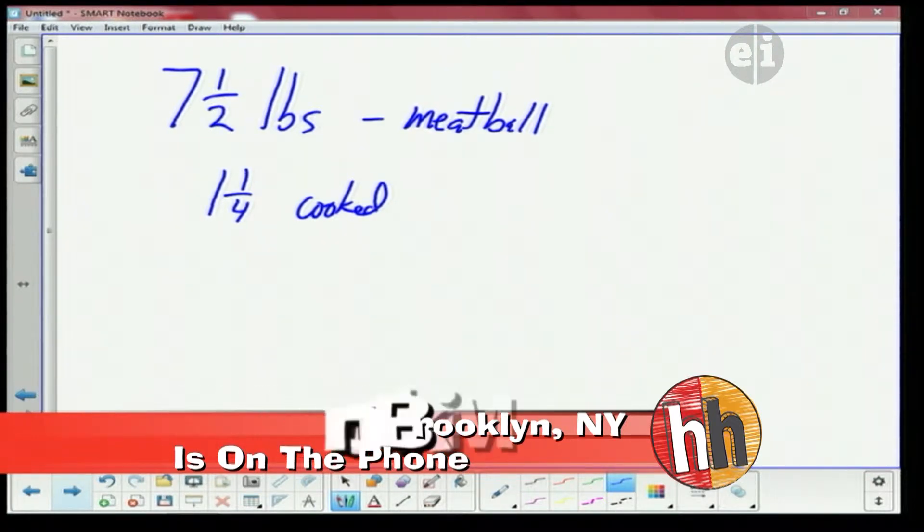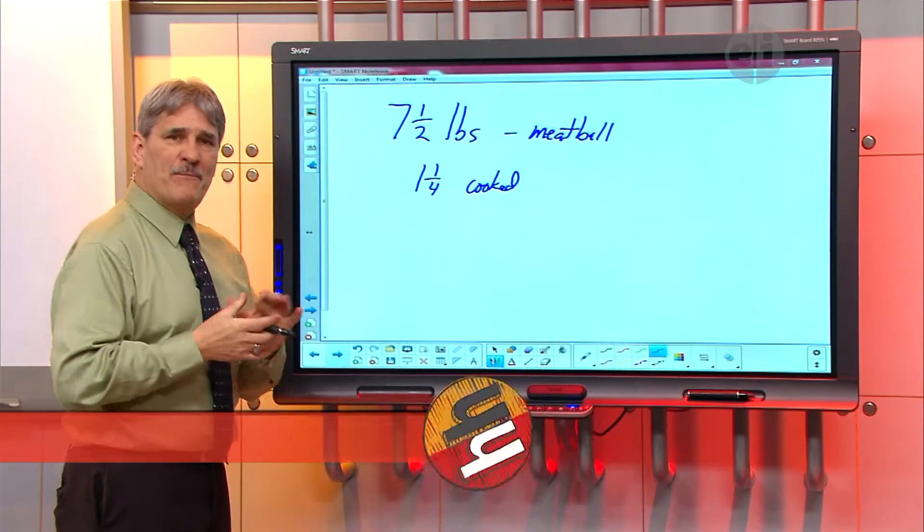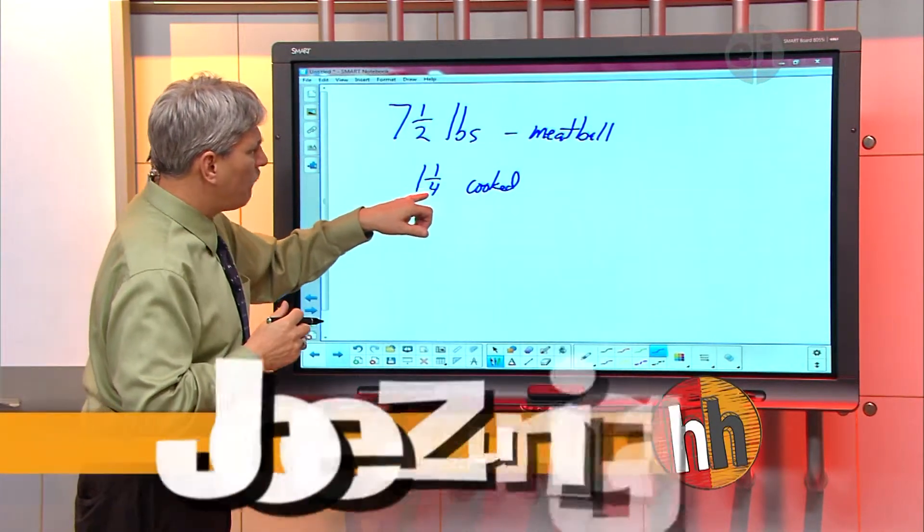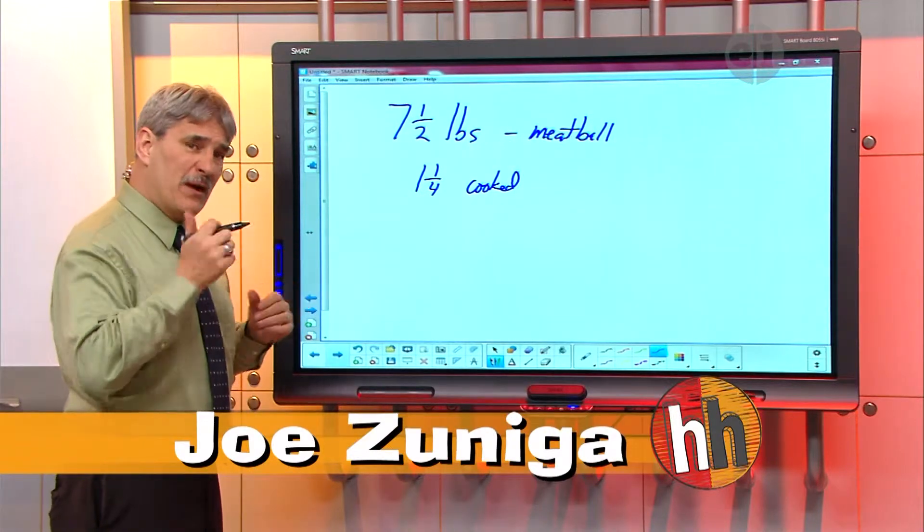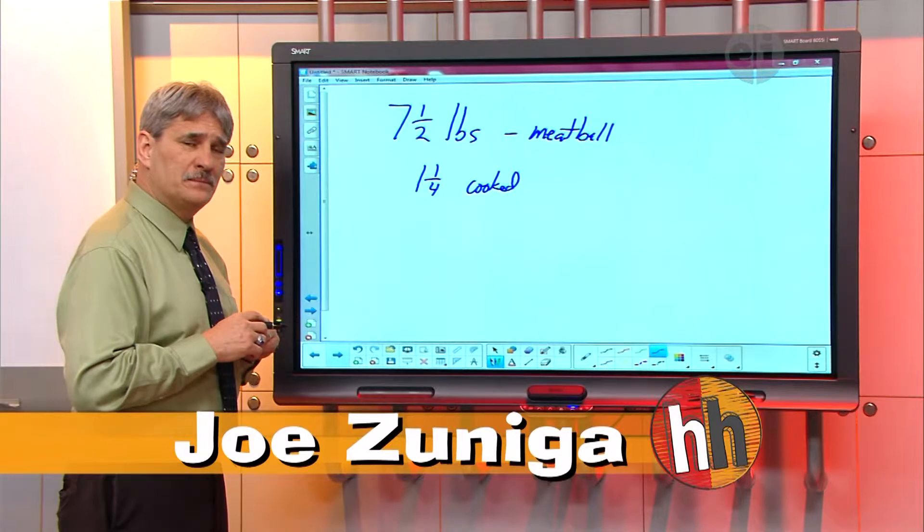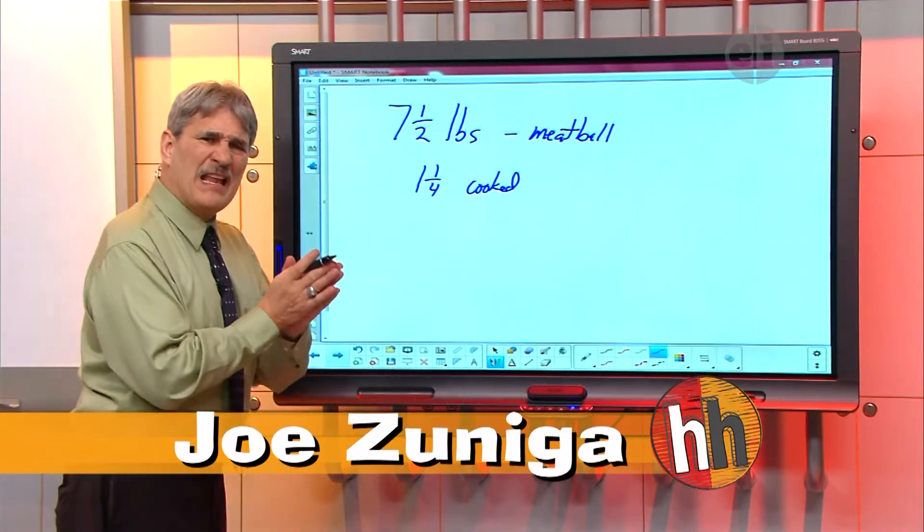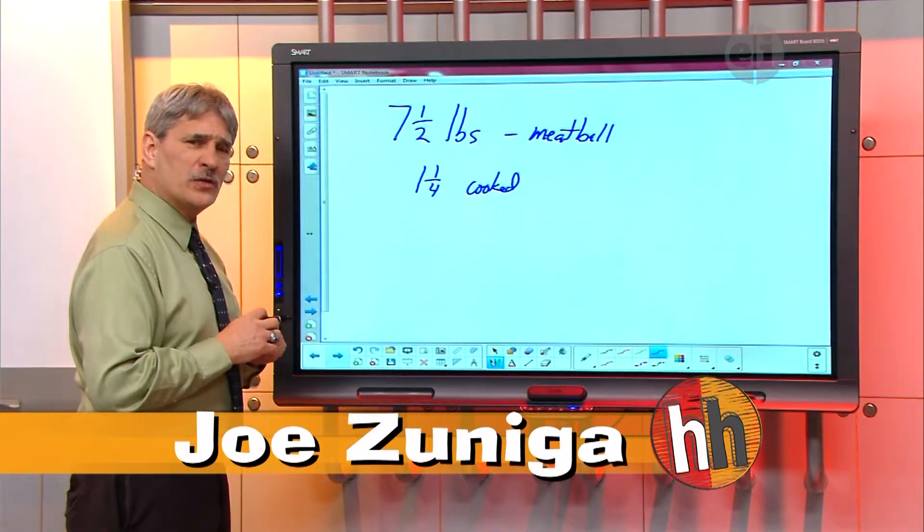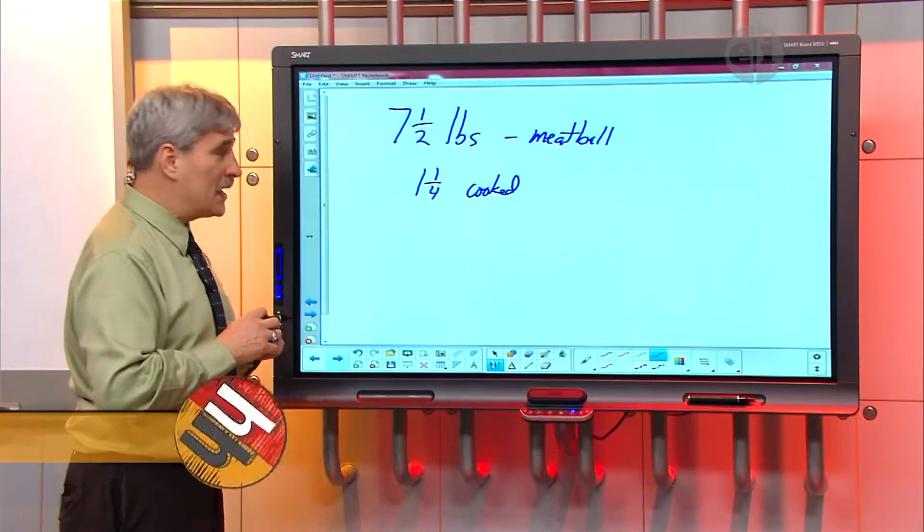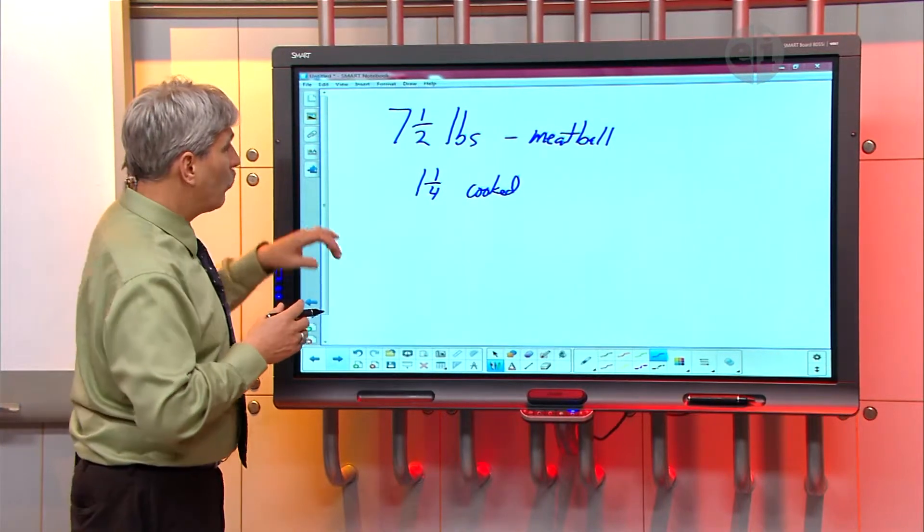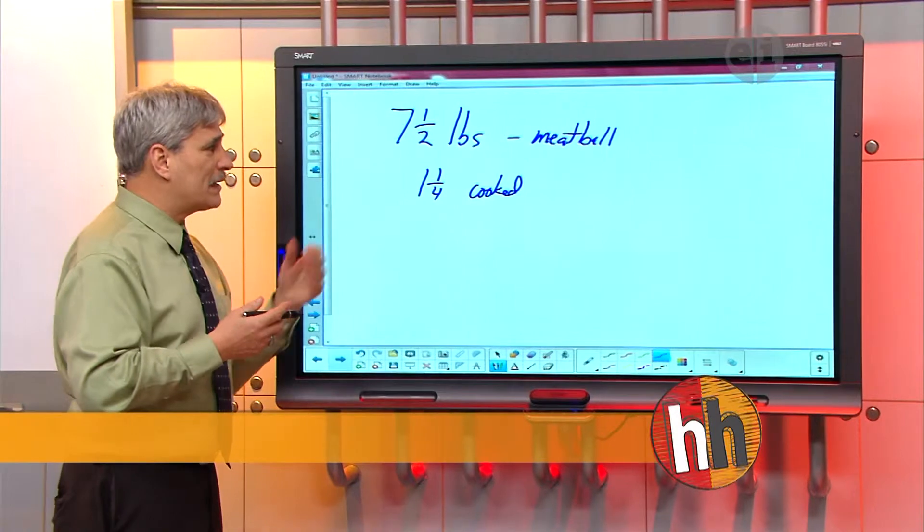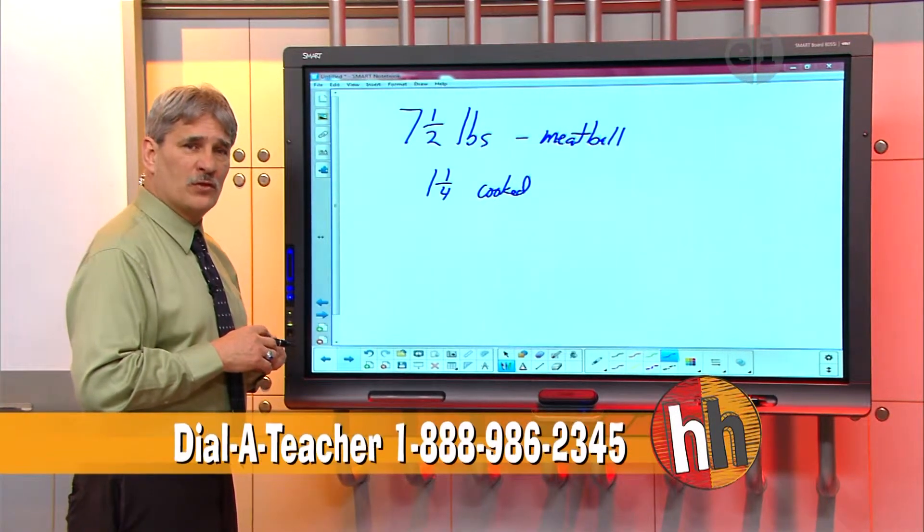Okay, so let's look at what we got here. We're starting out with seven and a half pounds of meatballs, right? And he cooks one and a fourth pounds. Whatever's left - that's the key word - gets frozen, right? Yes. Okay, when you hear what's left, what math function do you think about? I think subtraction. Exactly right. We're gonna start with the seven and a half pounds and subtract how much was cooked, and we'll be left with how much was frozen, right?